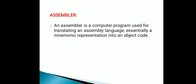Next is the assembler. You have already learned about the second generation programming language, which is assembly language. An assembler is a computer program used to translate assembly language — essentially a mnemonic representation or symbol code — into object code. The assembler translates assembly language into object code, similar to how a compiler compiles source code written in a high-level language into machine language.